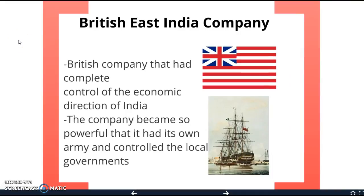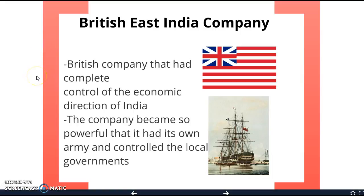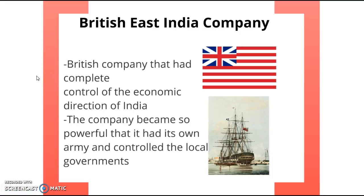First, we need to talk about the British East India Company. They were set up by the UK government and given permission to basically run India. The company had total control of India purely for economic reasons — they had direct control, so India was a colony. The company was so rich and powerful it had its own army and completely controlled the government.